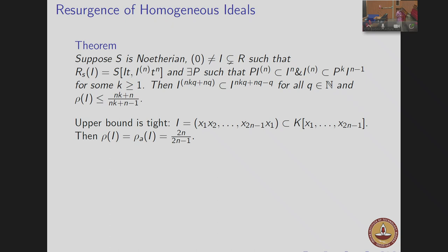This is a very sharp upper bound in the sense that there exists a prime ideal P such that this is achieved, and we have some nice infinite class of ideals where this bound is attained. When talking about the containment problem and resurgence, there are two types of examples: one coming from geometry — mainly Fermat's curve and points in projective plane — and one from the combinatorial side.